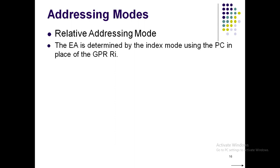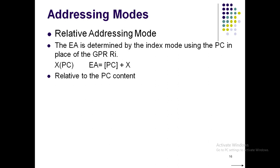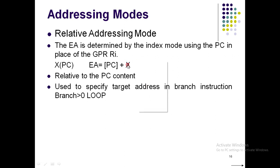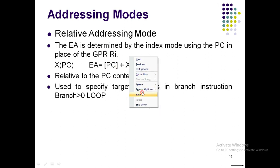You can observe that here we have X plus PC instead of X plus ri. In the previous slides, the formula was ri plus X. Here, X is still present, but instead of ri we are using the program counter PC. Whatever the contents of PC will be added with the constant X, and that is why we say the address is relative to the contents of PC. This mode is especially used whenever we perform branching operations.